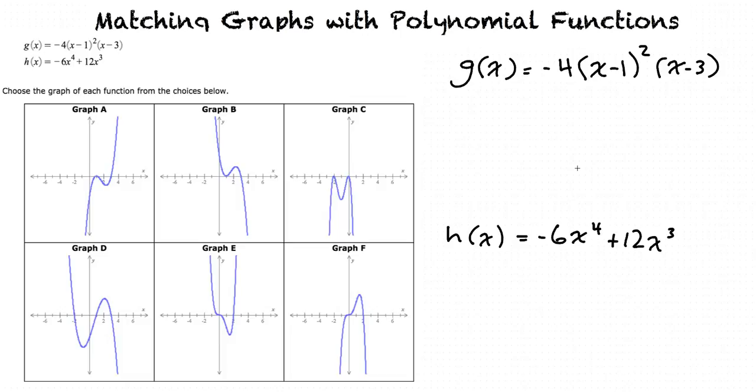If the degree is an even number, then both ends face the same direction. If the degree is an odd number, then each end faces a different direction.